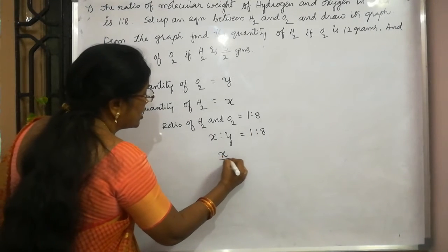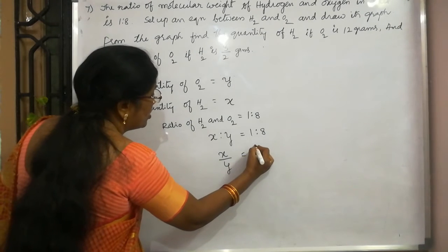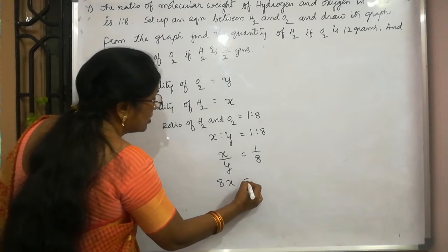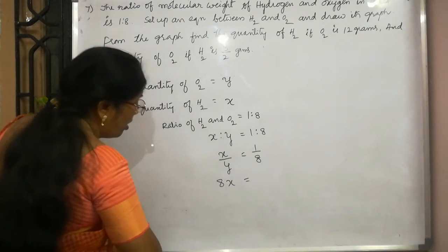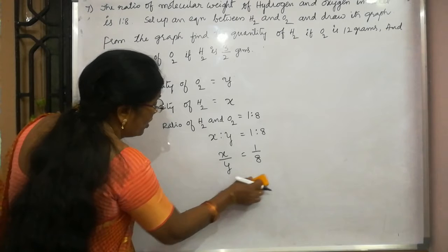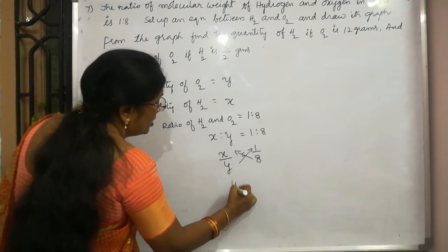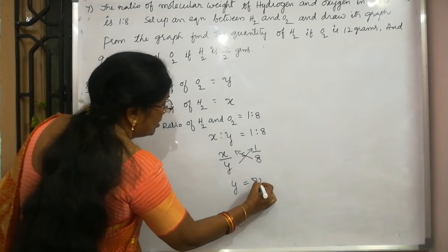You have to cross multiply. 8x is equal to y, or y is equal to 8x.